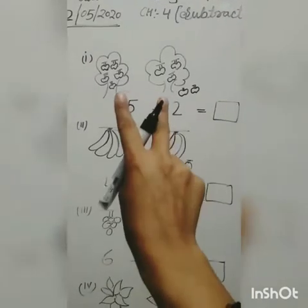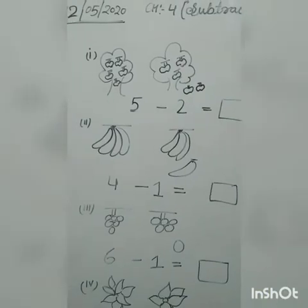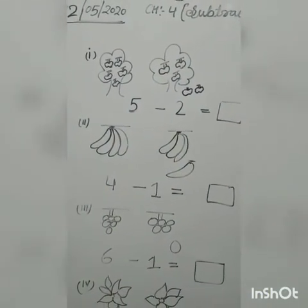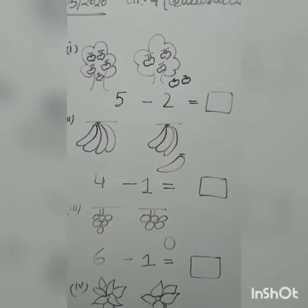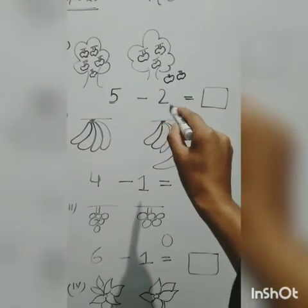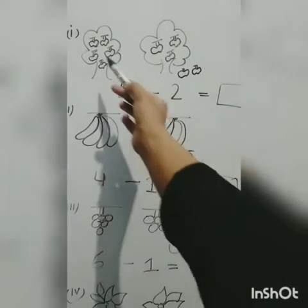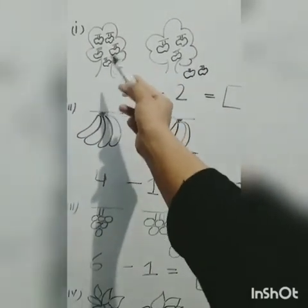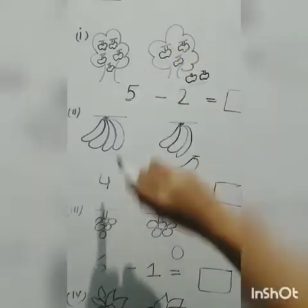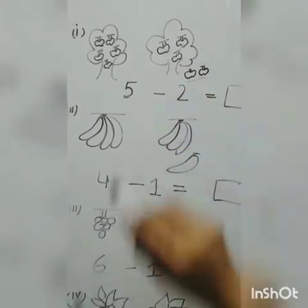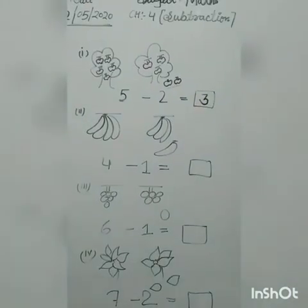You can see there are one, two, three, four, five apples in a tree. Write five. Two apples fell down from the tree, so write two. Five minus two — there are five apples and two fell down, so three apples are left. Write three. Five minus two is equal to three.